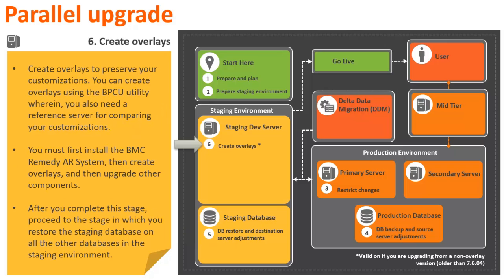Stage 6 applies only if you are upgrading from a version earlier than 7.6.04. In this stage, you must create overlays to preserve your customizations. You can create overlays using the BPCU utility, wherein you also need to reference a server for comparing your customizations. You must first install the BMC Remedy AR system, then create overlays, and then upgrade the other components. After you complete this stage, proceed to restore the staging database on all the other databases in the staging environment.